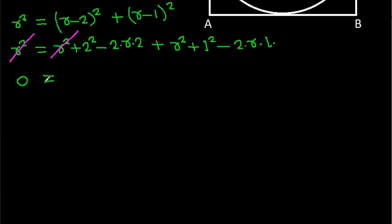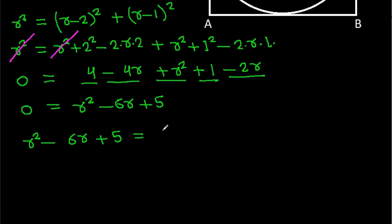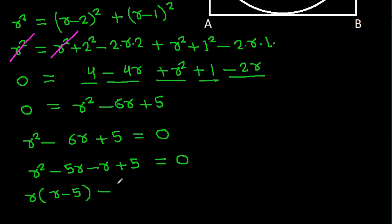After cancellation, 0 equals 4 minus 4R plus R² minus 1 minus 2R, which simplifies to R² minus 6R plus 5 equals 0. Factoring gives R times (R minus 5) minus 1 times (R minus 5) equals 0, so (R minus 1)(R minus 5) equals 0.